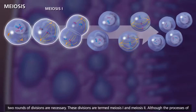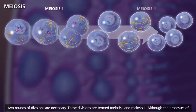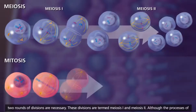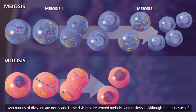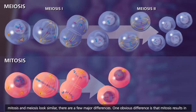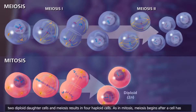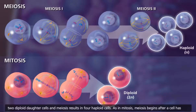These divisions are termed meiosis I and meiosis II. Although the processes of mitosis and meiosis look similar, there are a few major differences. One obvious difference is that mitosis results in two diploid daughter cells, and meiosis results in four haploid cells.